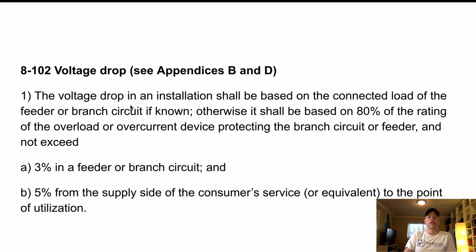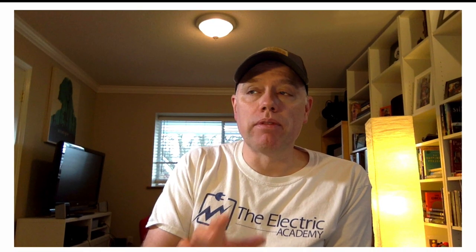So first off, we're going to look at 8-102 and so it says see appendices B and D. We're going to jump into D in a second here, but it says here 102 says the voltage drop in an installation shall be based on the connected load of the feeder or branch circuit if known. Otherwise it should be based on 80% of the rating of the overload or overcurrent device protecting the branch circuit or feeder and not exceed.